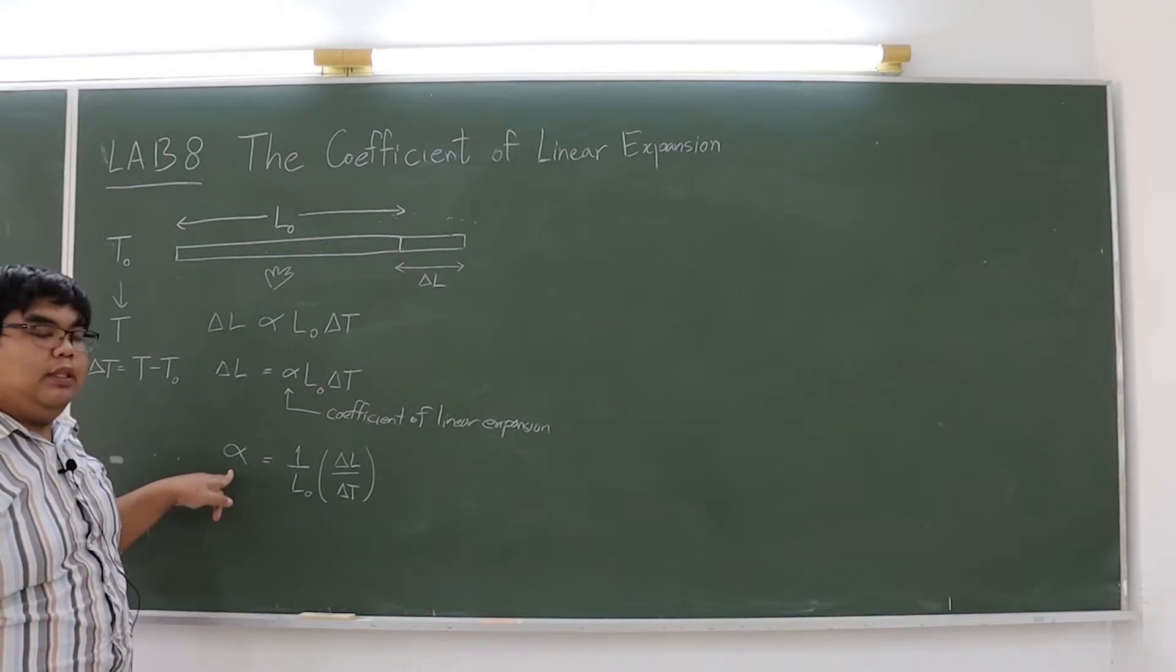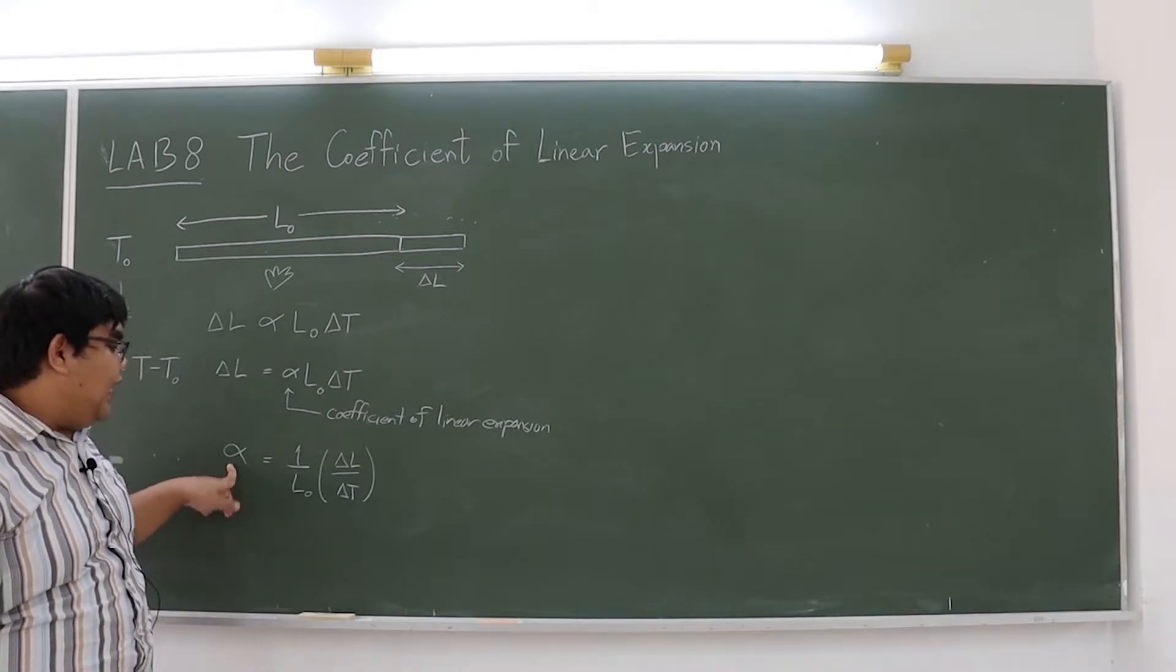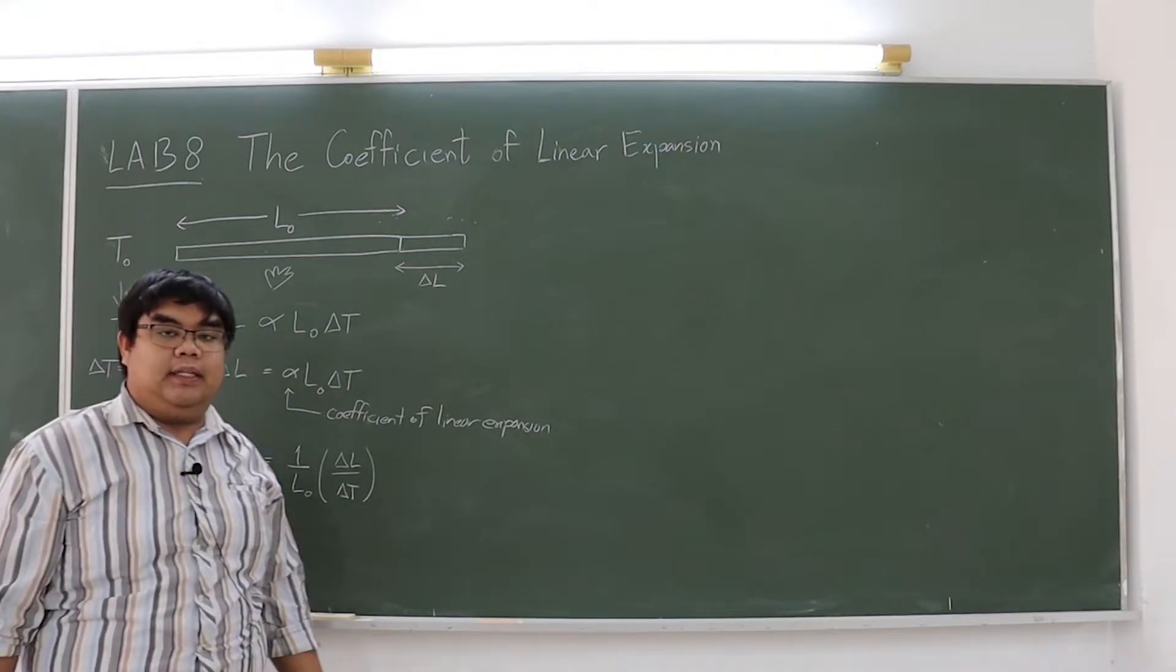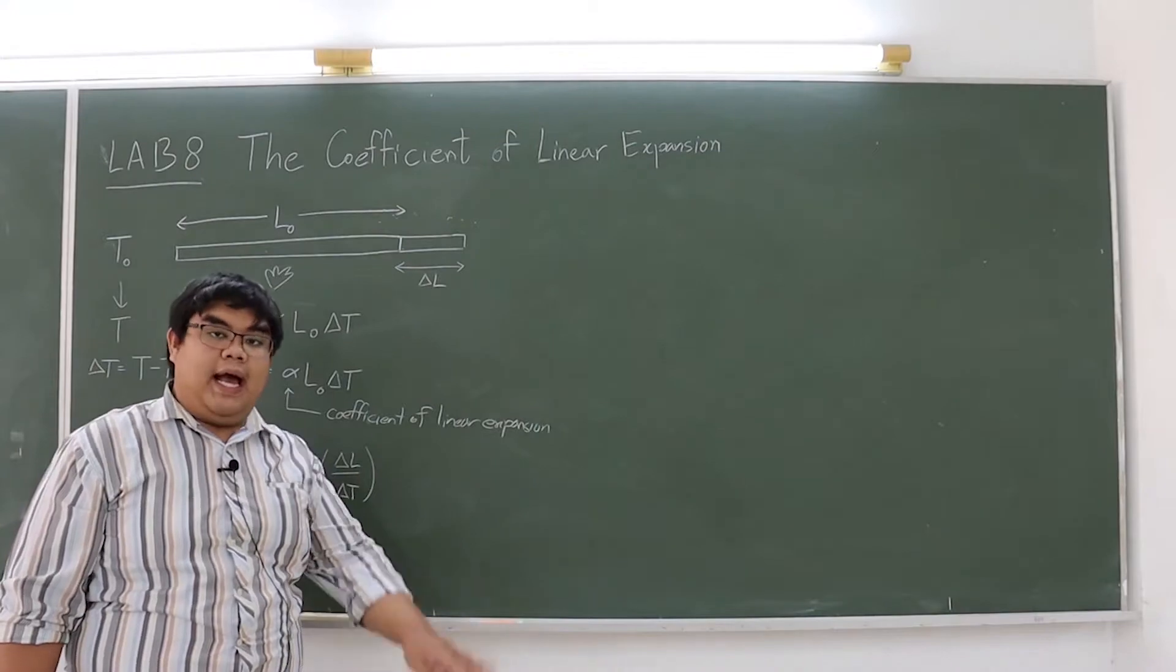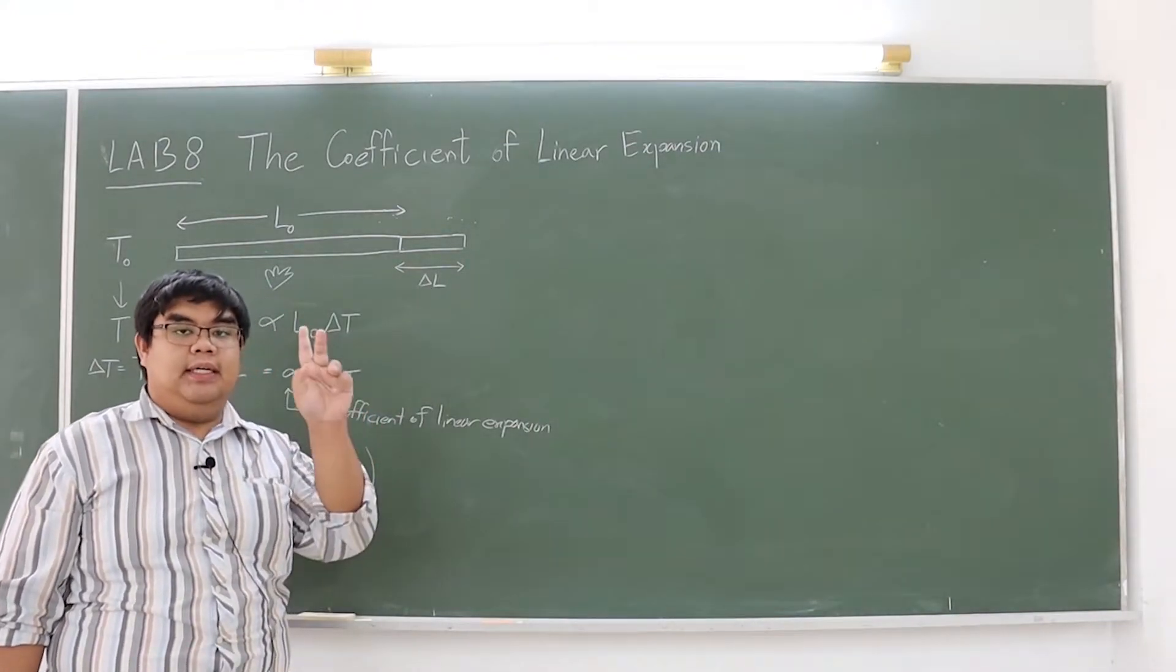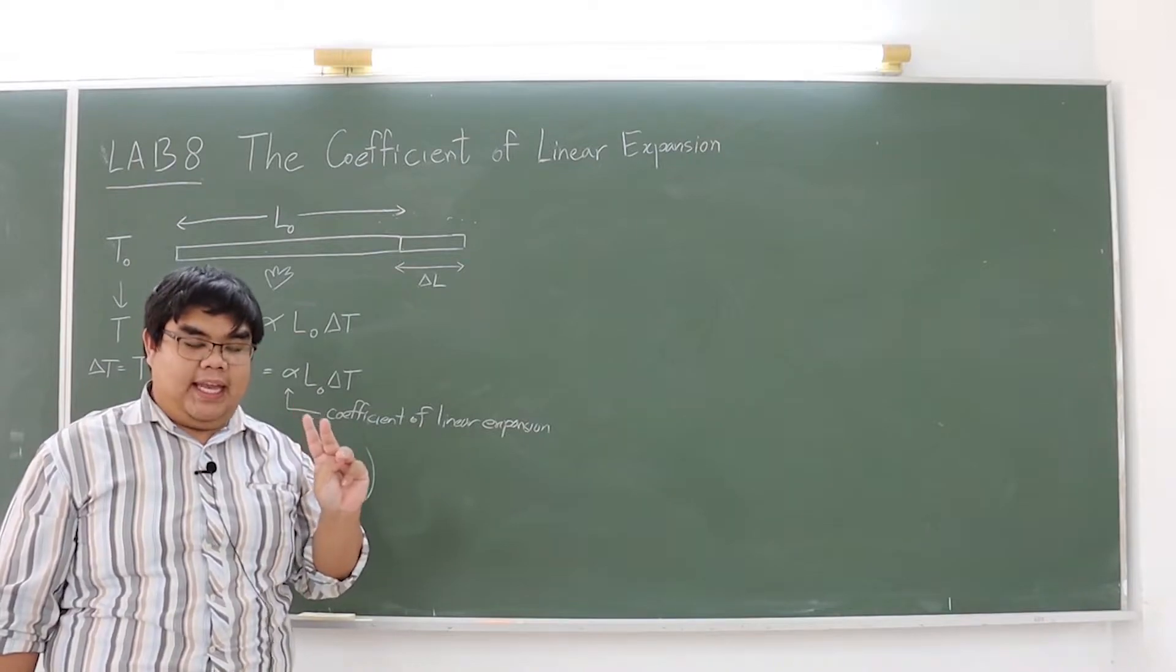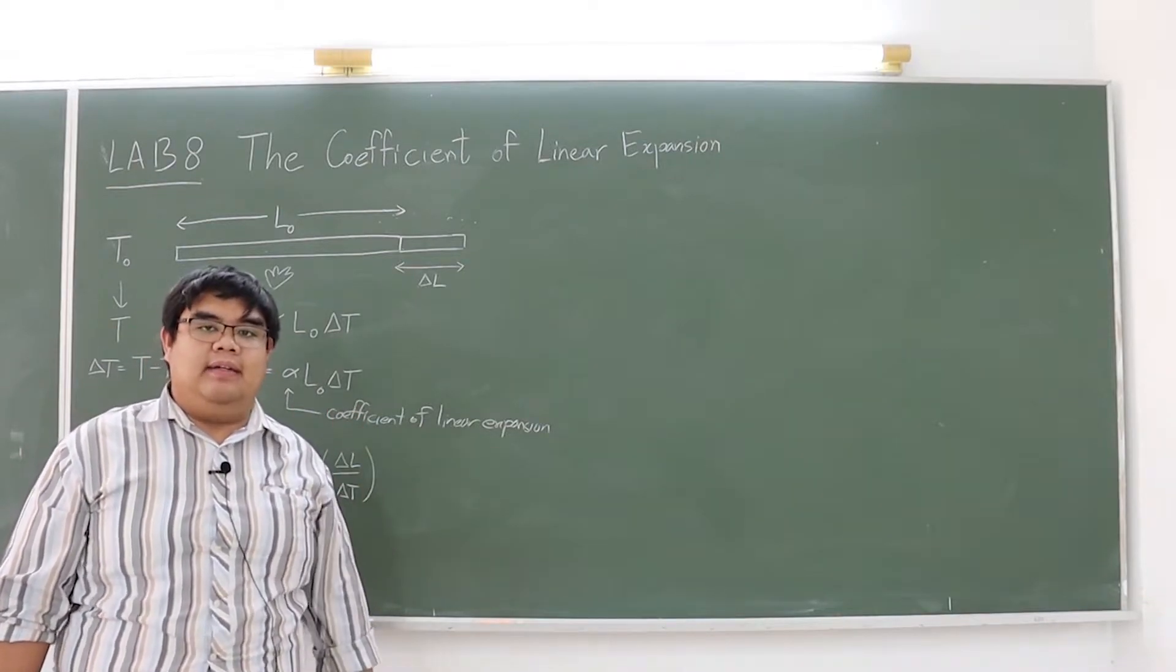By measuring these three properties, you can calculate the coefficient of linear expansion. In this lab, we will measure the value alpha of three metals: copper, iron, and aluminum. Next, we go to the experiment setup.